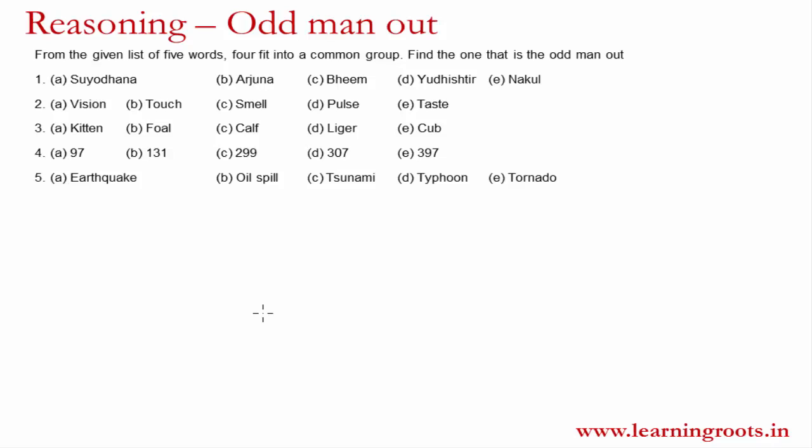So: Suryodhan, Arjun, Bheem, Yudhishthir, Nakul. Anybody with a working knowledge of the Mahabharata would know that there were 5 Pandavas — Yudhishthir, Bheem, Arjun, Nakul and Sadev. So Suryodhan is someone who does not belong to this group; he was a part of the Kauravas. So he is the odd man out. The question can sound as ridiculous as this — so we have to be ready for all eventualities.